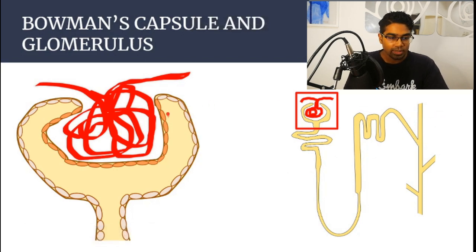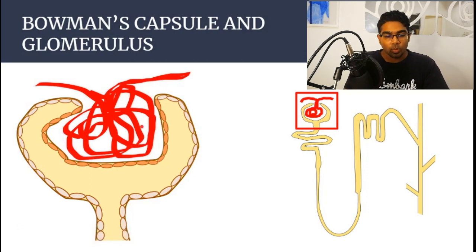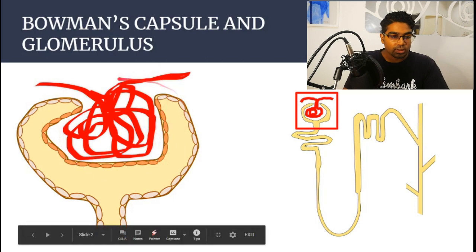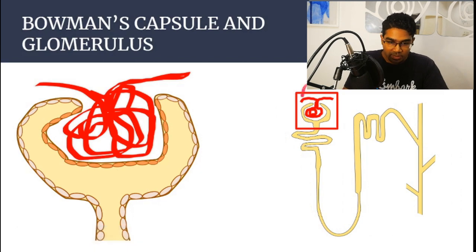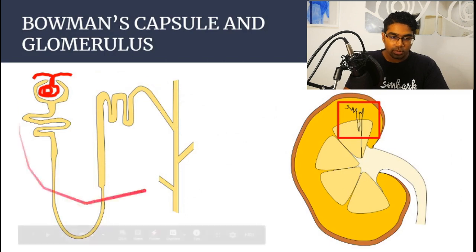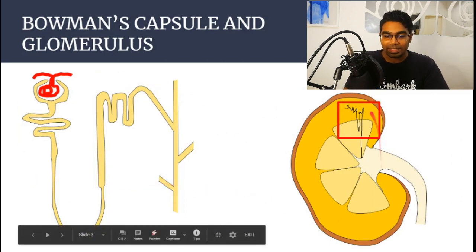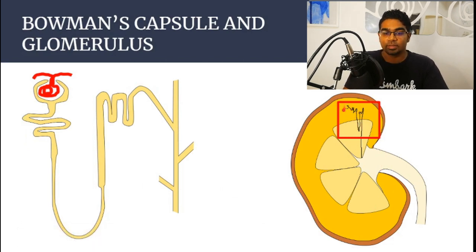Let's dive right into it. So this is Bowman's capsule, and then we have the glomerulus. Before we get into detail, let's look at where this is found first of all. This is found in the nephron — this structure on the right is called the nephron. This is the part that has been zoomed in here, and then the nephron in turn is found in the kidney. This is where the nephron will be located.